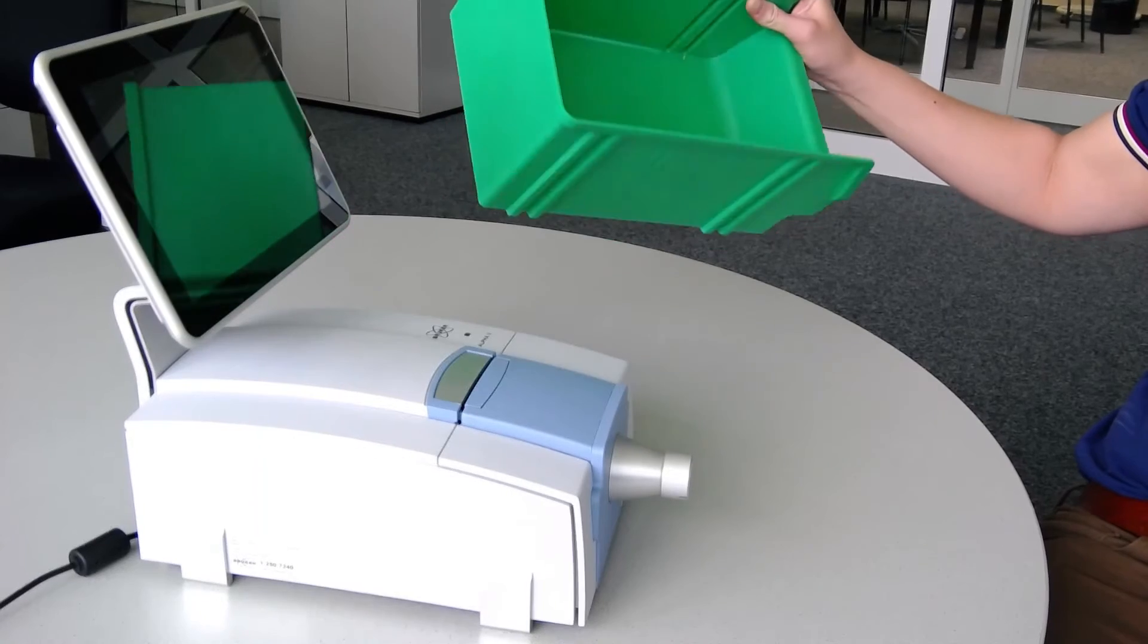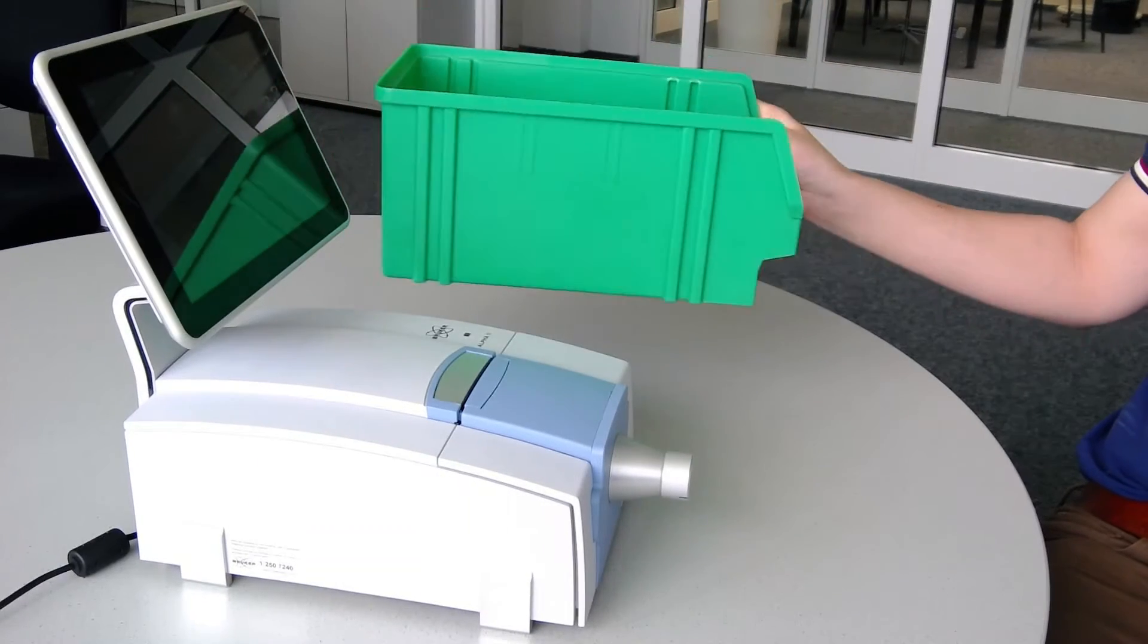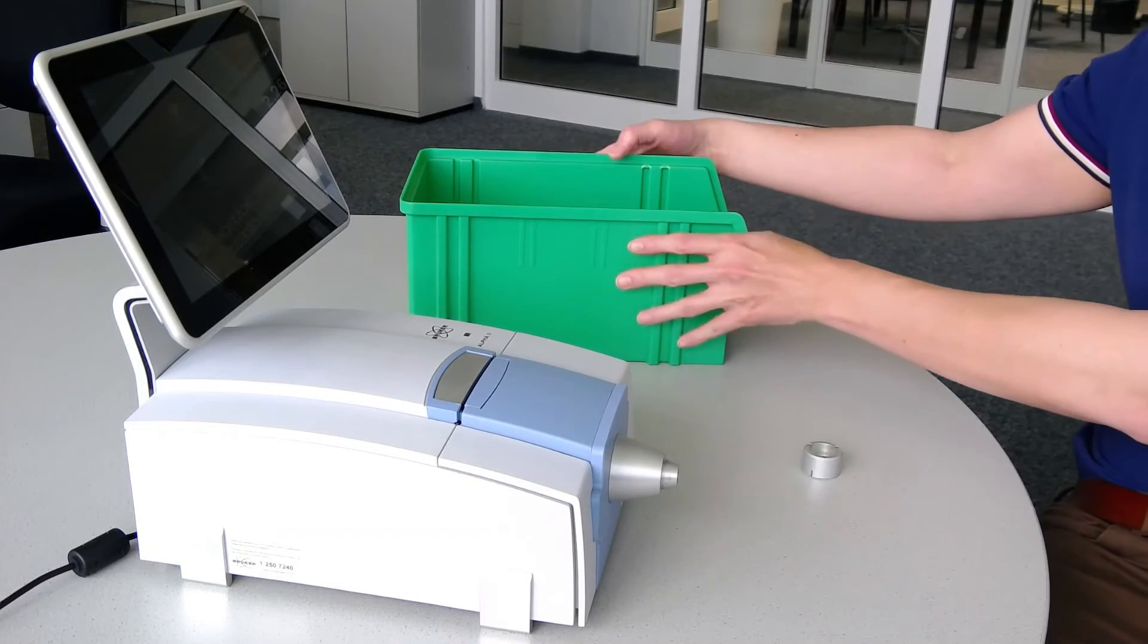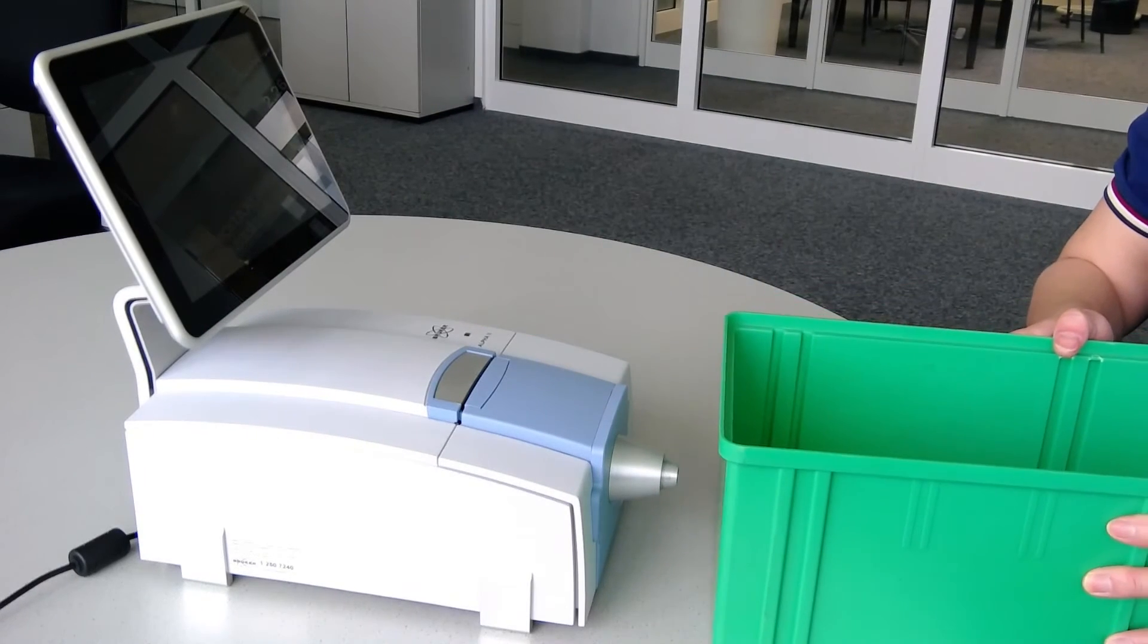It can even handle large or bulky plastic pieces by making measurements in reflectance mode. The item simply needs to be placed in front of the Alpha 2 for analysis.